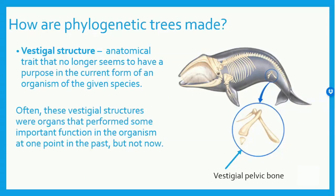Vestigial structures are anatomical traits that no longer seem to have a purpose in the organism. An example of this are the reduced pelvic bones in the whale. Often these vestigial structures are organs, bones, or muscles that performed an important function in the past, but not in the current species. Vestigial structures are hints that the animals we see today evolved from now extinct ancestors that had different shapes and structures.